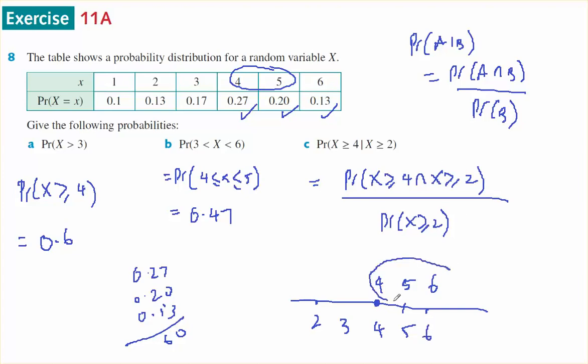Where is the intersection? 4, 5, and 6. That's equal to the probability that X is bigger than or equal to 4 over the probability that X is bigger than or equal to 2.